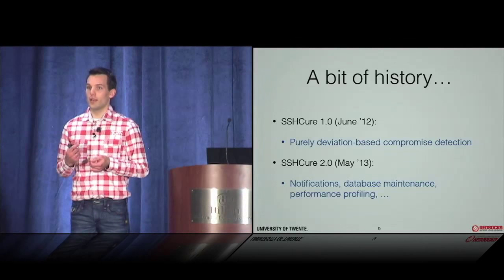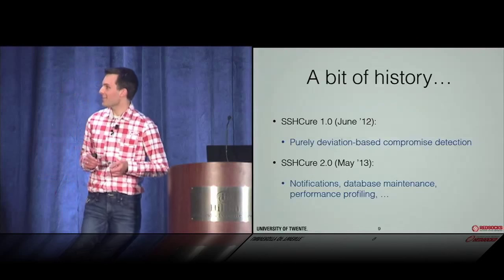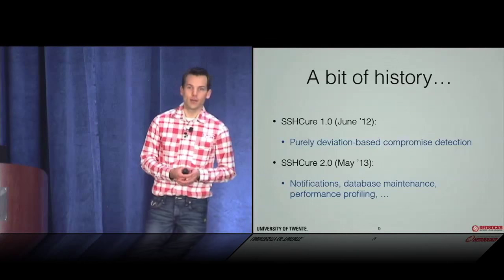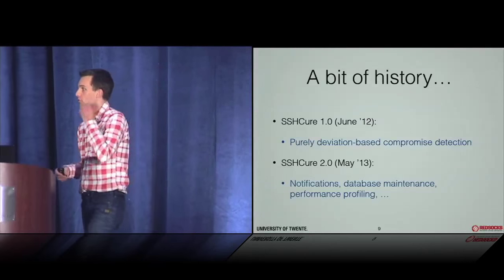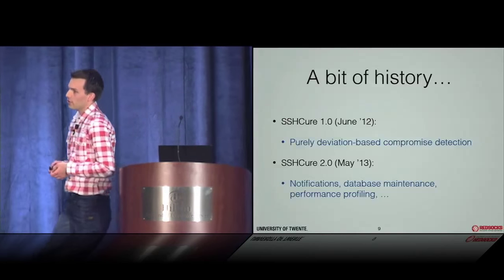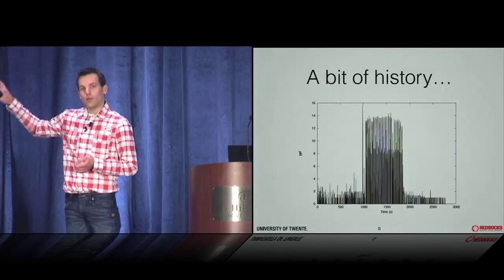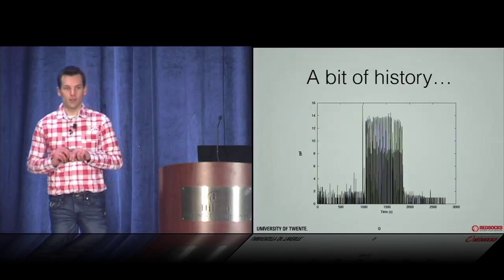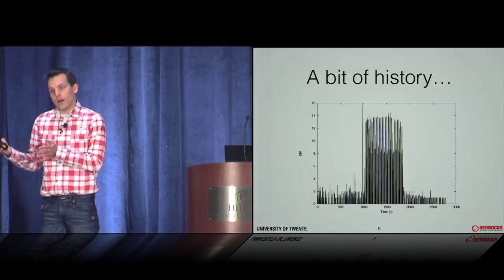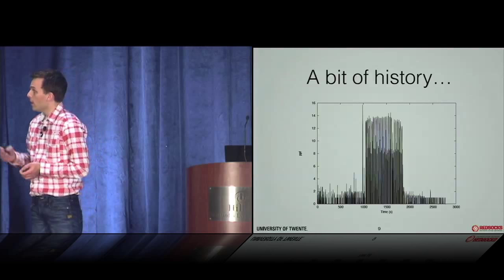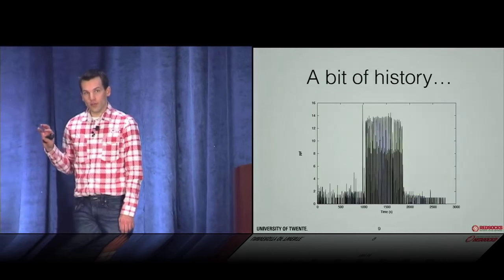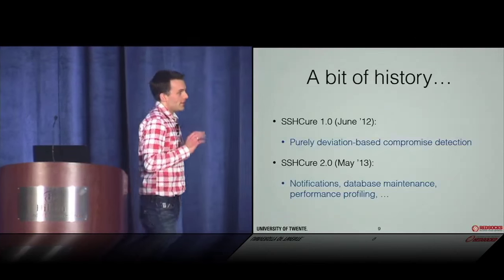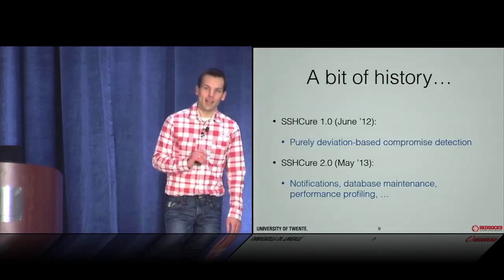Who has ever heard of Shikure or seen the paper? Some hands — well, that's already more than I expected. We started working on Shikure in June 2012, so it's roughly two and a half years old. At that time it was my PhD work; Luke was still a student. We worked on a purely deviation-based compromise detection algorithm. We took the three-phase attack model and implemented compromise detection as a significant deviation from the brute force phase behavior. That was rather naive, but at that moment we decided to go on with it.